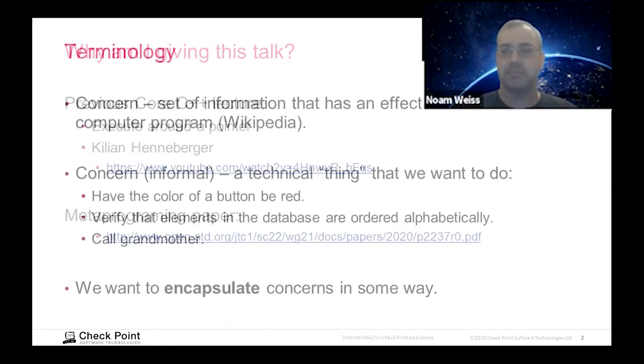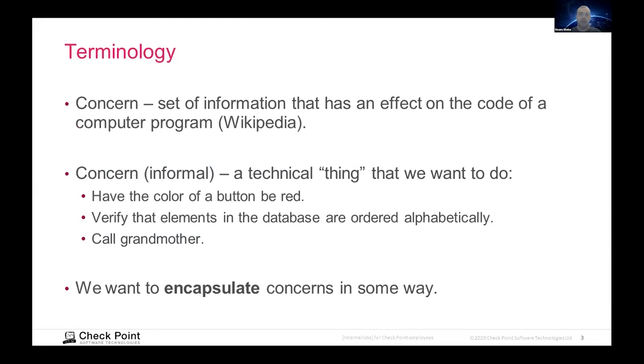So I'm going to start by some terminology. And the first thing that I'm going to define is something that is called a concern. There's a Wikipedia definition, which is a set of information that affects the code. Very formal. But informally, it's just the technical things that we want to do. And I have some examples here. It ranges from something very specific, like making sure that a button is colored red to doing some sort of calculation or arranging a database or even calling your grandmother. Anything that you want your program to do is a concern. It's very close to saying it's a requirement, but if our requirement is we need this program to be ready by next week, that might be a concern, but not the kind of concern that I'm talking about here right now. But any consideration, whether it is a requirement from a customer or design requirement, it's a concern.